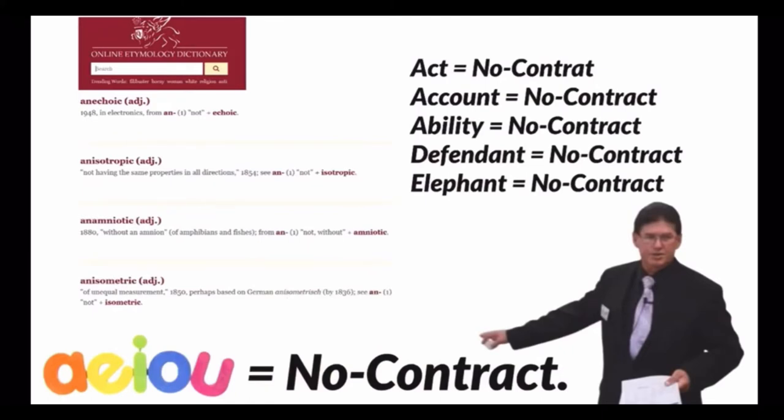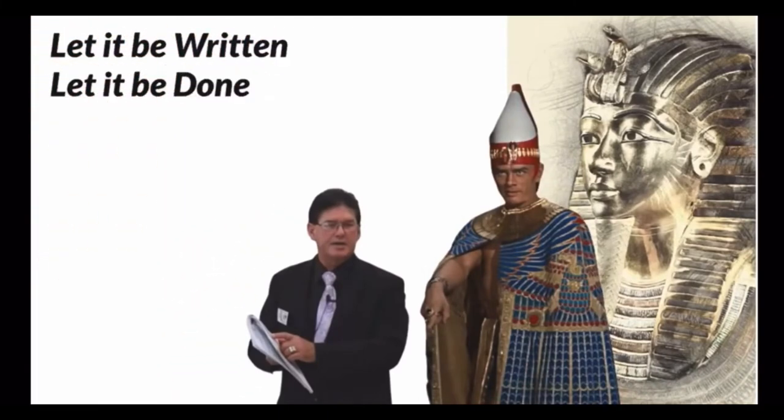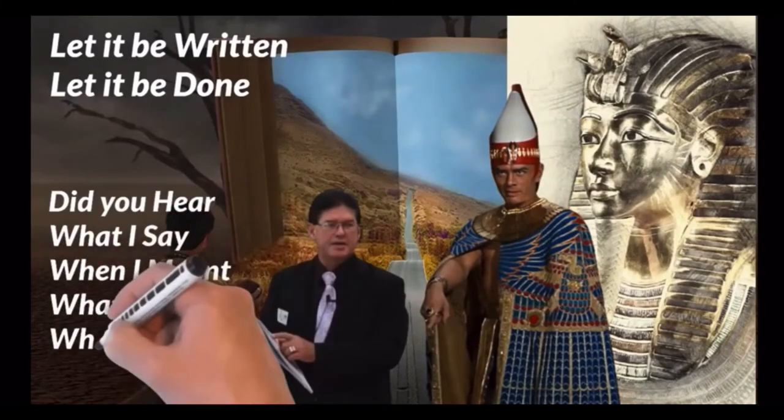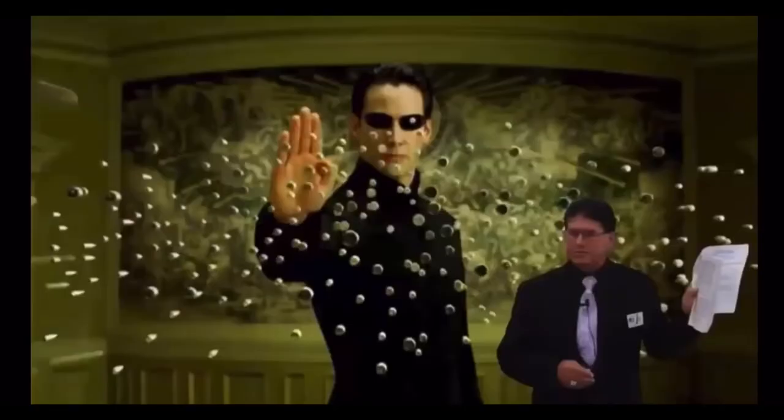ACT means no contract. In 4700 B.C., Pharaoh said, so it is written, so it shall be done. There was a reason for that, because oral contracts cannot be seen or proven. Did you hear what I said, what I meant, what I said, what I meant, what I said? If you don't see it written, you can't prove it.